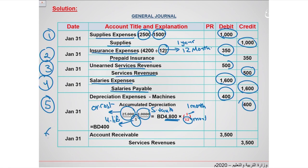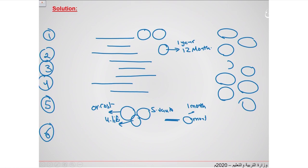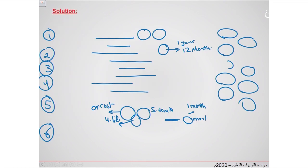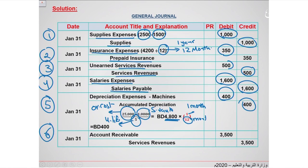Transaction six: services performed for $3,500 during the month have not been recorded. Prepare the general journal entry: put account receivable on the debit side and service revenue on the credit side, $3,500 debit and $3,500 credit.